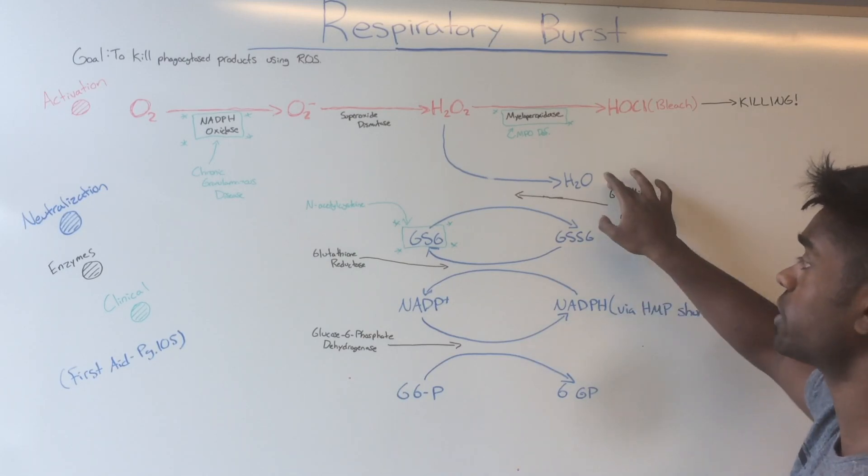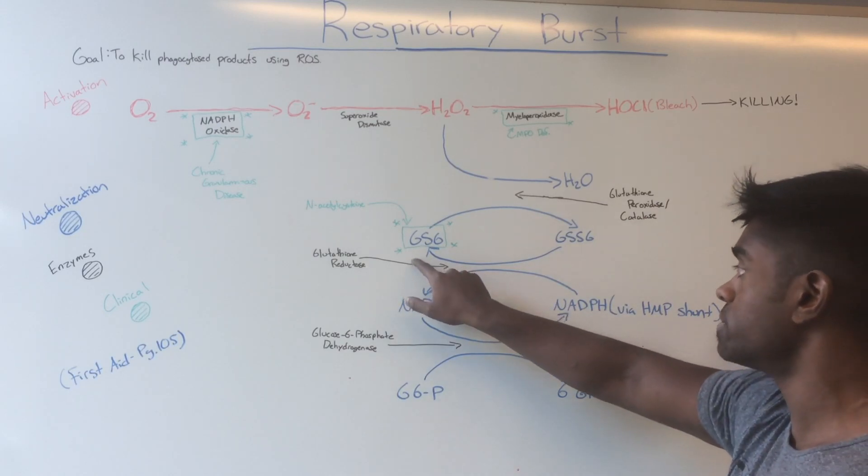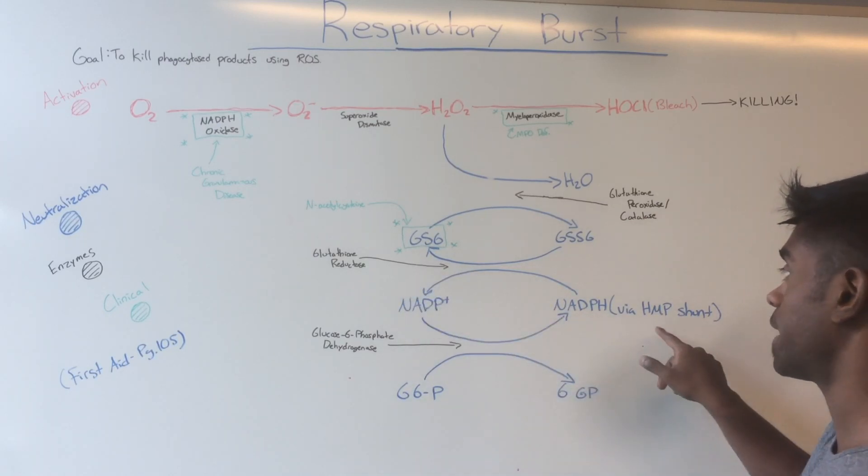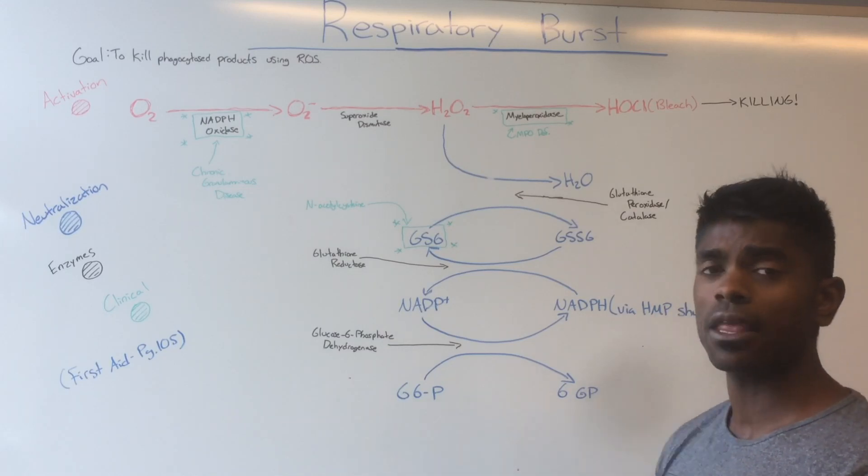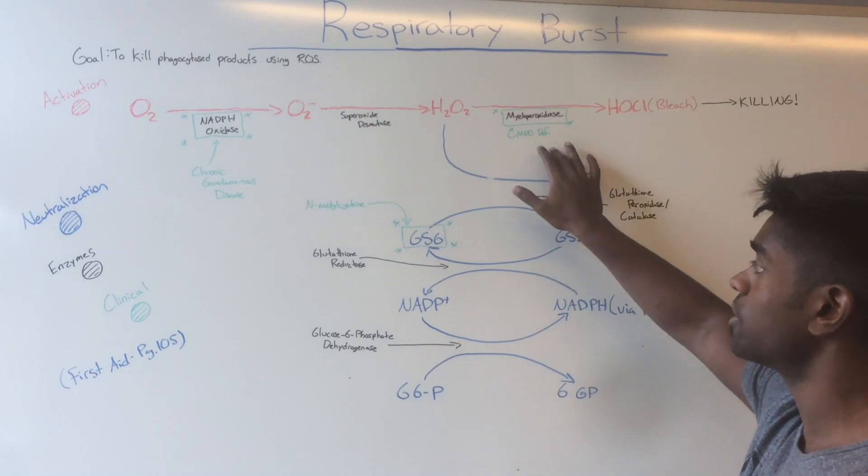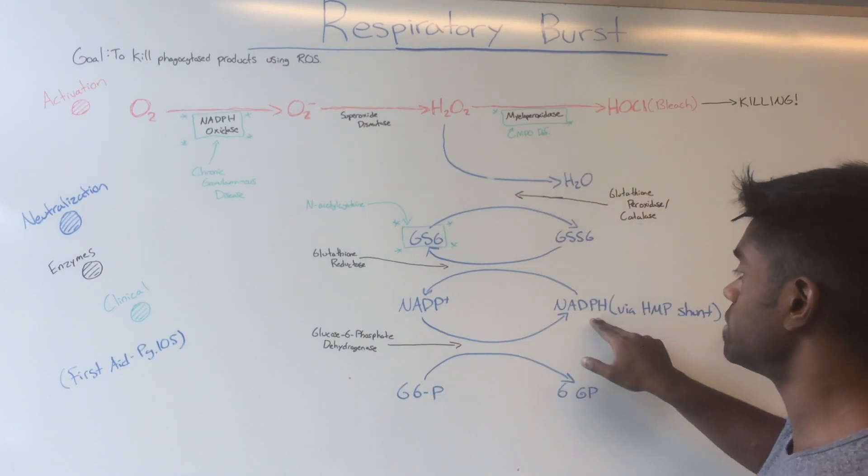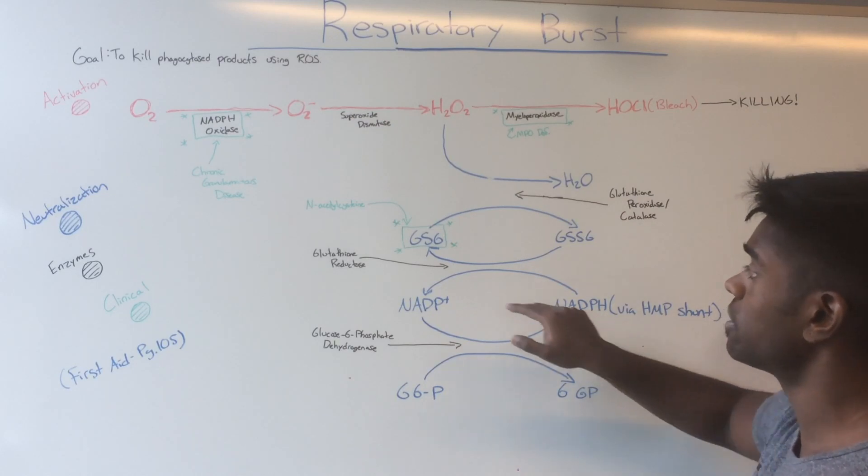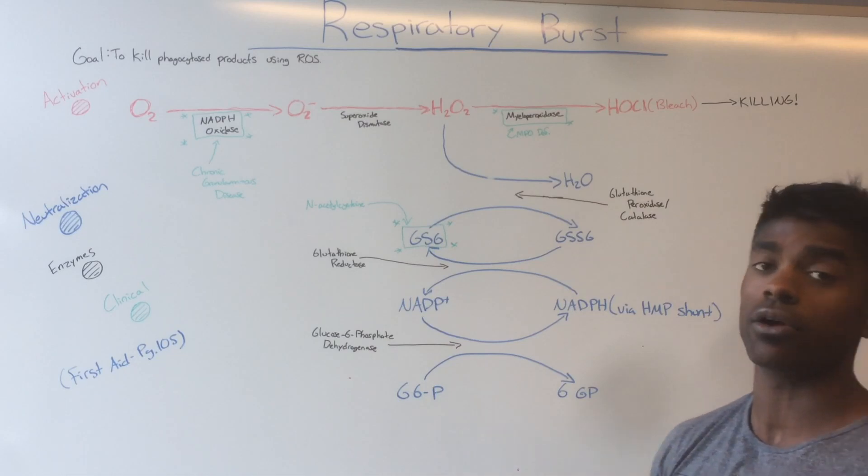Glutathione is generated using NADPH from the HMP shunt, which is formed from glucose-6-phosphate. In order to neutralize these products, we need different steps involving G6P and NADPH to form GSH, which is the reduced glutathione form.